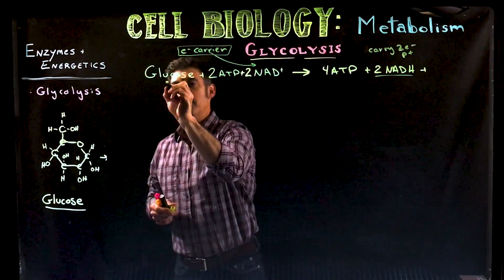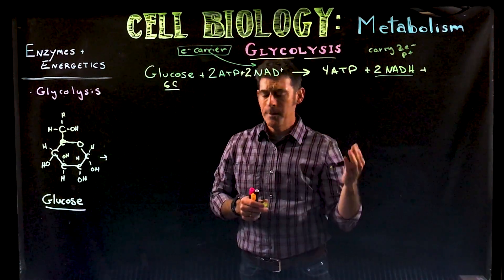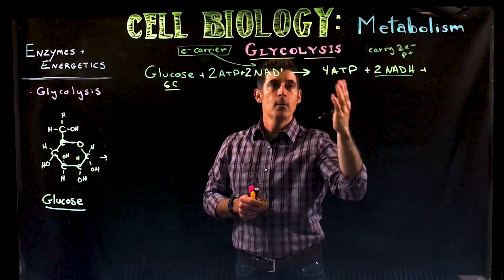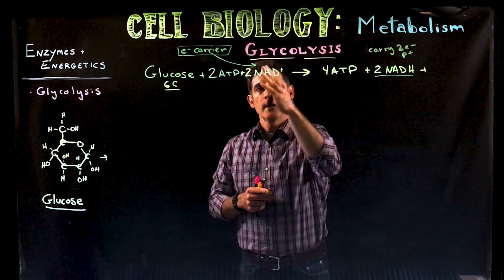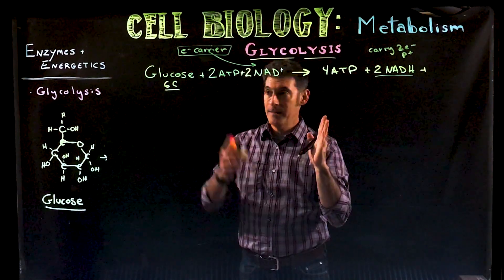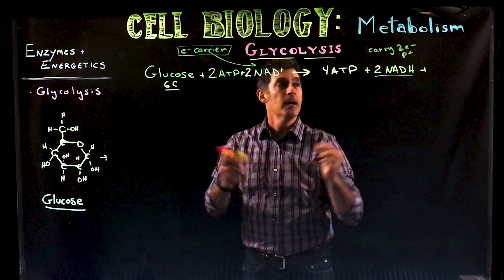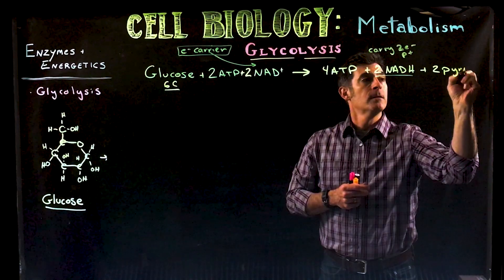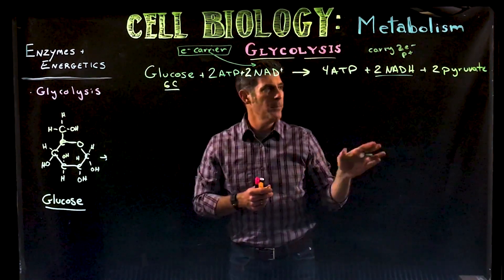Glucose starts as a six-carbon molecule. Glycolysis — 'glyco' meaning sugar, 'lysis' meaning to break — is essentially the process of splitting the six-carbon sugar in half into two three-carbon molecules called pyruvate. That's what we end with as a product, and pyruvate's structure will become important.